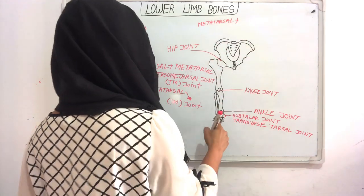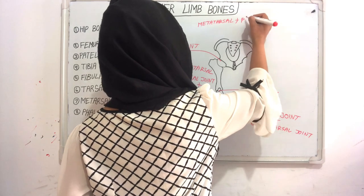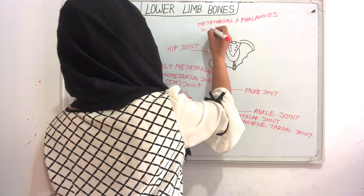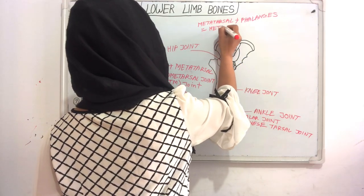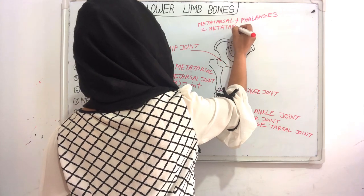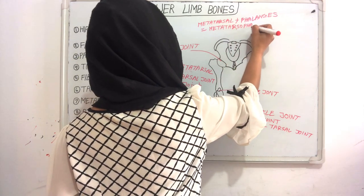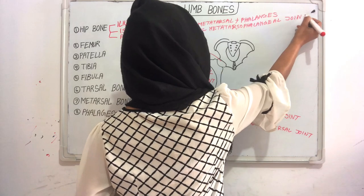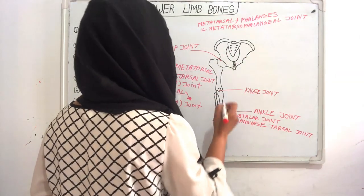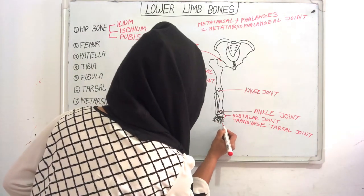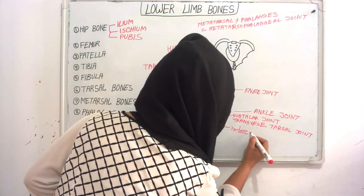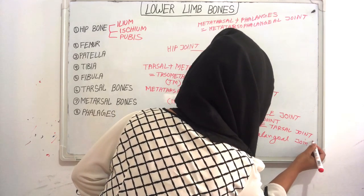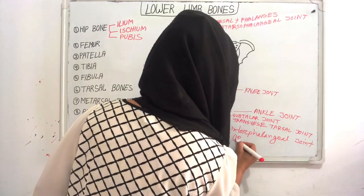Here our metatarsal bones joint with our phalanges — this is called the metatarsophalangeal joint. Then our phalanges joining each other is called the interphalangeal joint, or IP joint.